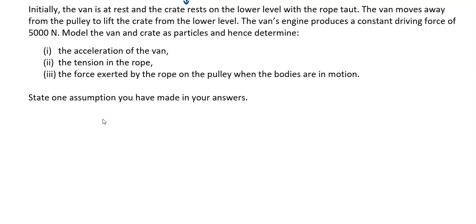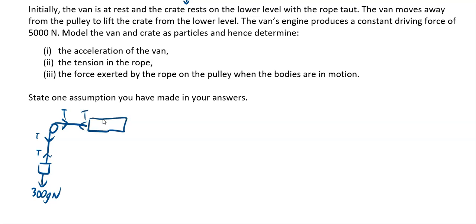So our diagram: you've got your pulley, you've got your crate which was 300 kilograms, so 300g was the weight of it. You've got your T going this way, your T going this way, and then your T going this way — the T going left from the van. Then your van, the mass of the van was 1300 kilograms, and the van was producing a tractive force of 5000 newtons to make the whole thing accelerate to the right and vertically up. That is your system.